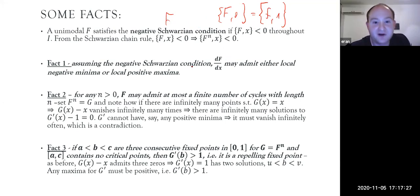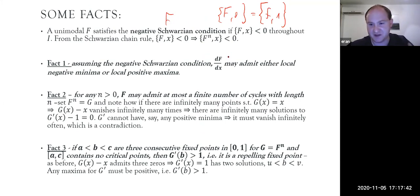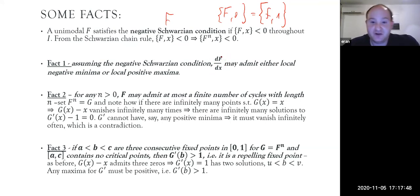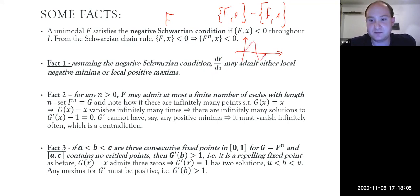We have three facts about the negative Schwarzian condition. Fact one: assuming the negative Schwarzian condition, the first derivative of f may admit only local negative minima or local positive maxima — that is, the first derivative of a unimodal function with negative Schwarzian derivative cannot have local positive minima.